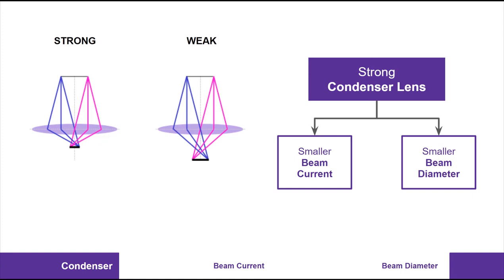At the same time, the condenser lens will also control the beam diameter. The beam diameter at the source is the same for both the strong and weak lenses. Once the beam is focused by the condenser lens, the beam has a new effective size. A stronger deflection will result in a smaller beam diameter. This also means that beam current correlates with the beam diameter. If you want a smaller beam spot on your sample, you will need to use a smaller beam current.